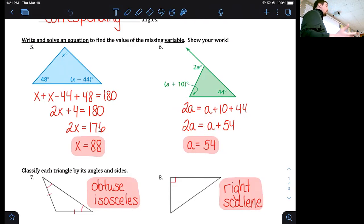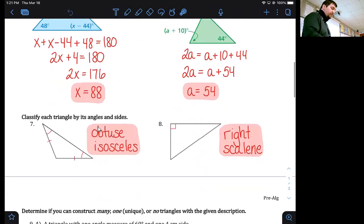Number seven, here's an obtuse angle and then you have two sides and two angles that are equal, so that's obtuse isosceles. Number eight, here's a right angle, none of the sides are the same, so this is right scalene. Any questions on the front side of the quiz?